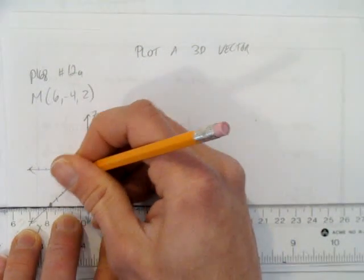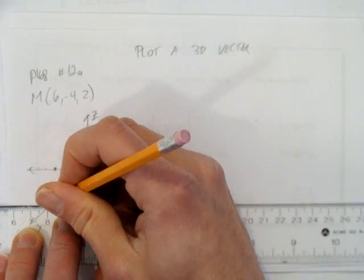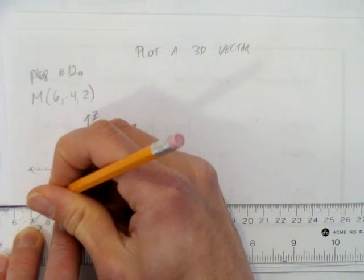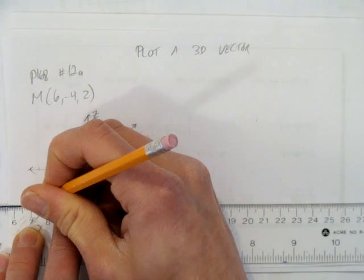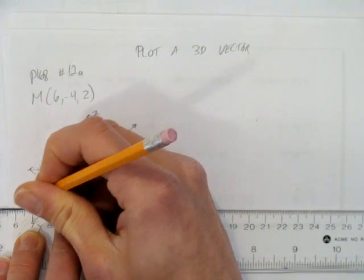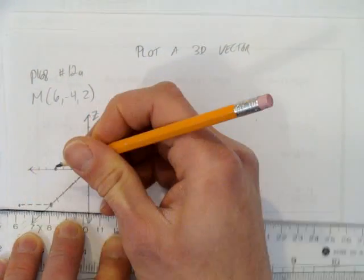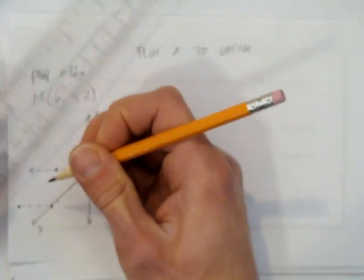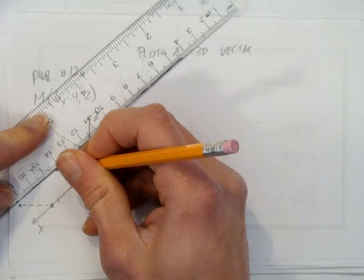Then we're going to go over 4 for the y. That's 1, 2, 3, 4, and put a dot. You don't have to put a dot there, it just helps. It's going to look nice later. And I'm going to connect that with this dot.